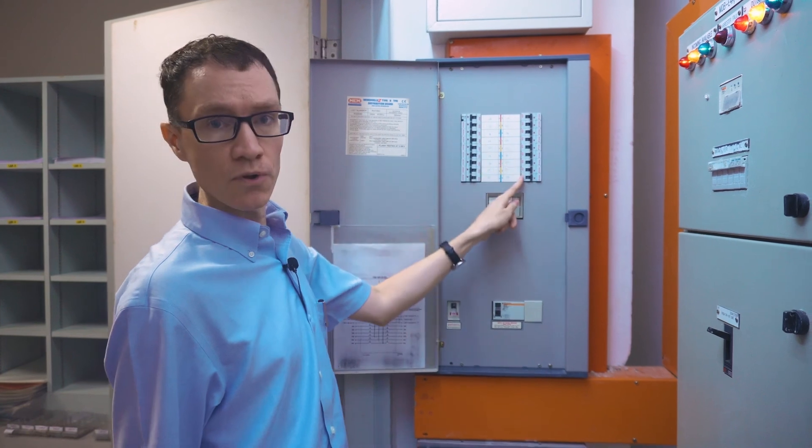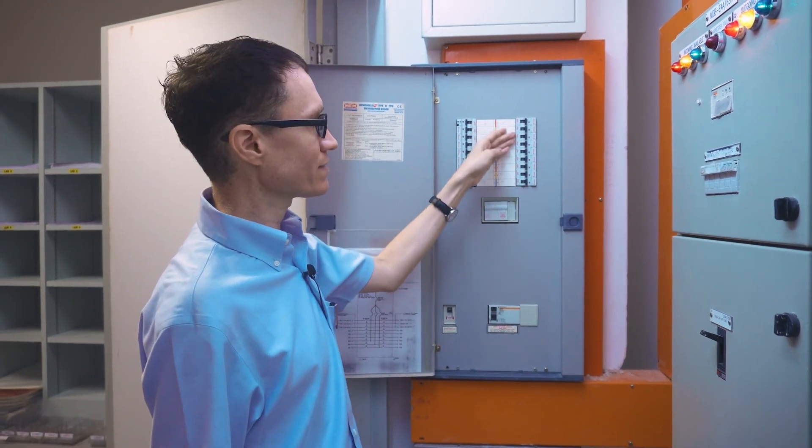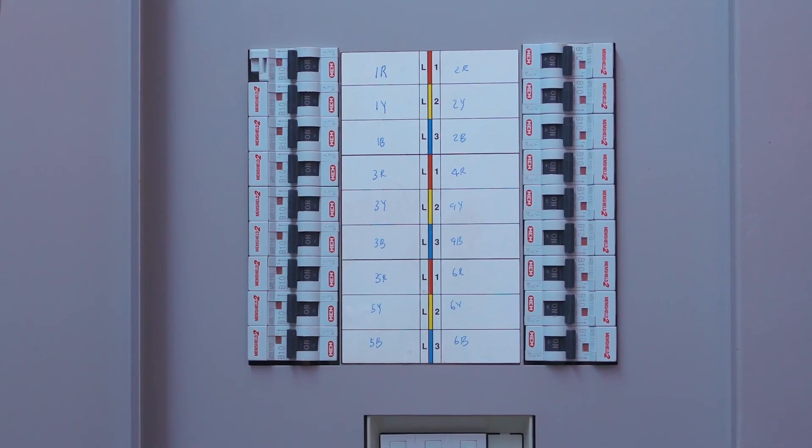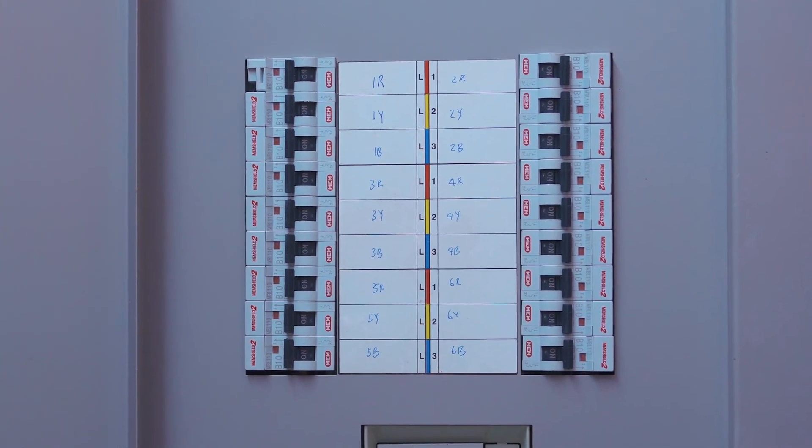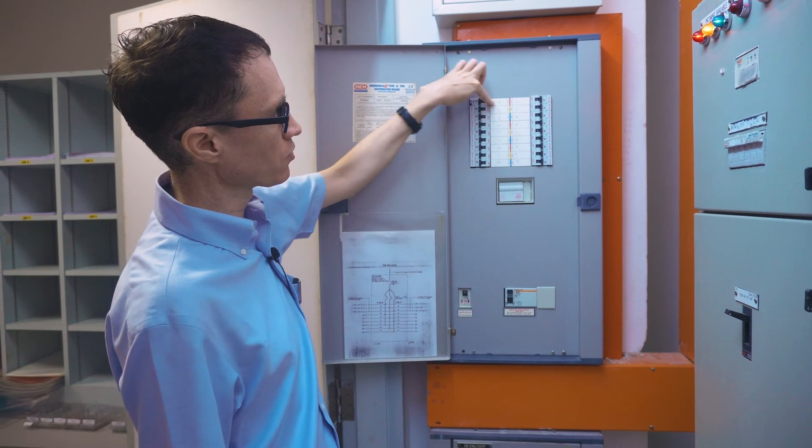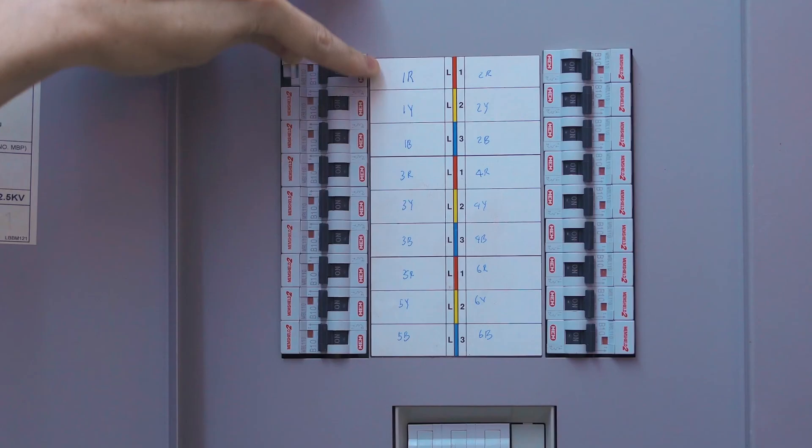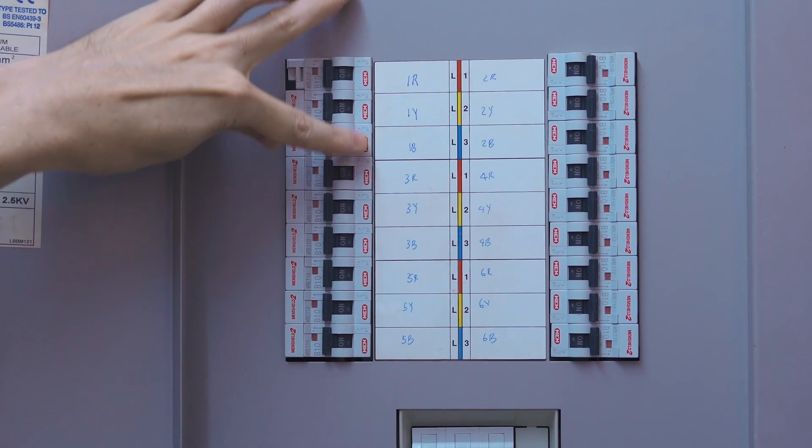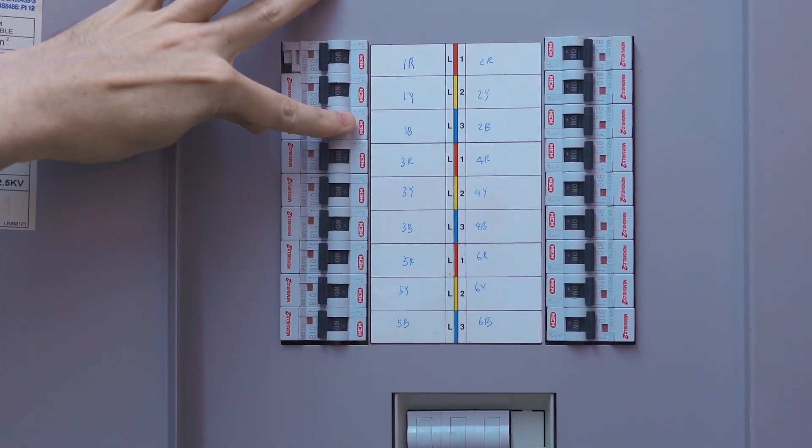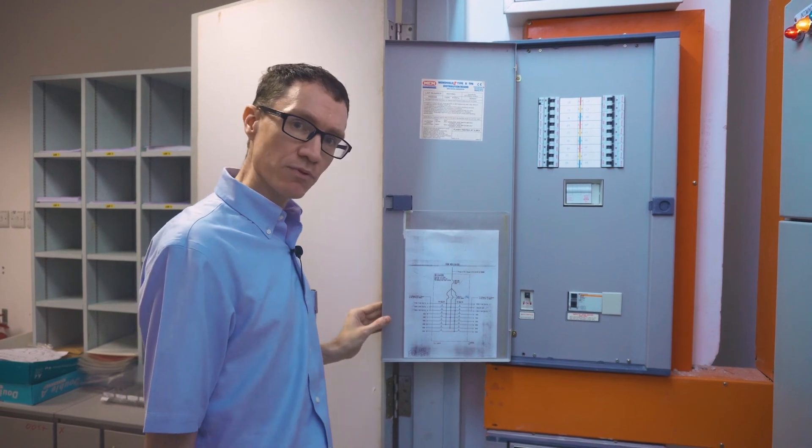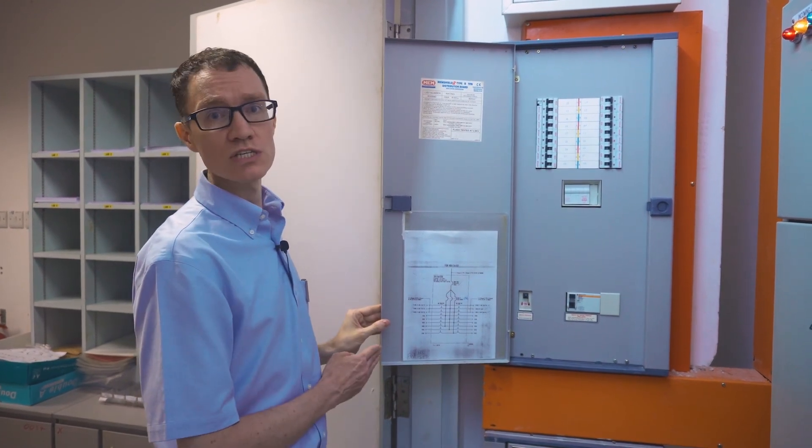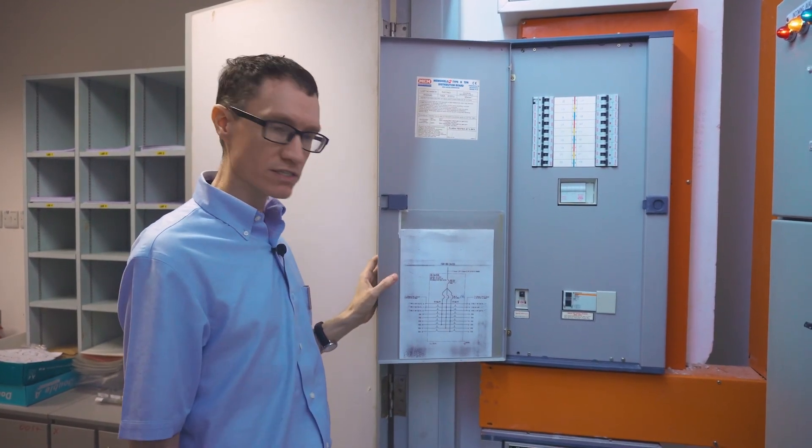Let's take a look at this other circuit breaker box over here. These are called single pole circuit breakers. They're not ganged together, so each circuit breaker only controls a single phase. And it is color coded right here. We can see that this top row of circuit breakers corresponds to the red phase. Row number two corresponds to the yellow phase. Row number three corresponds to the blue phase, and so on and so forth.